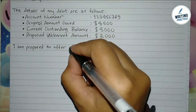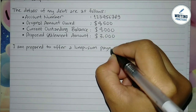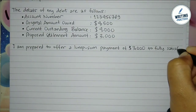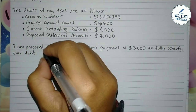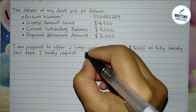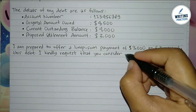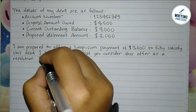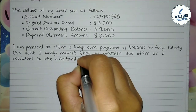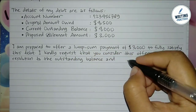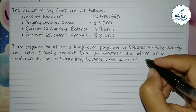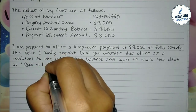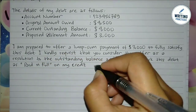In the third paragraph, this is the main point of the letter — the settlement offer. Here you need to write the specific settlement amount offered by you as the debtor. For example, you can write: 'I am prepared to offer a lump sum payment of three thousand dollars to fully satisfy this debt.' After mentioning the amount, continue by requesting the recipient to consider the offer as full debt resolution. You may write: 'I kindly request that you consider this offer as a resolution to the outstanding balance and agree to mark this debt as paid in full on my credit report.'